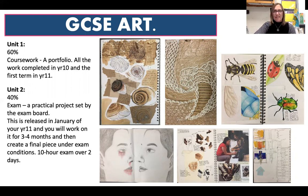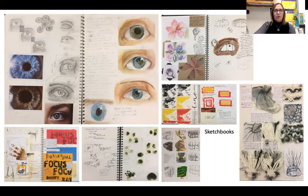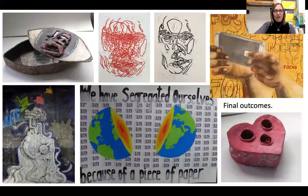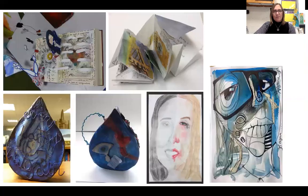A lot of this is observational work. You can see from all of these slides that we look at lots of different things like figurative work, portraits, natural forms — we also explore different ideas, different concepts, and some issue-based artwork as well. So there is no limit to what you can do within GCSE art and design. We also do a little bit of three dimensional work, and here are some more examples of that.